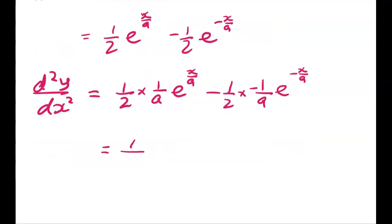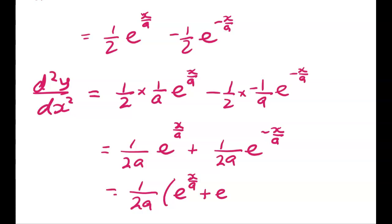That gives me 1 over 2a, e to the x over a, plus 1 over 2a, e to the power of negative x over a. And we can write that as this, 1 over 2a, into e to the x over a, plus e to the negative x over a.